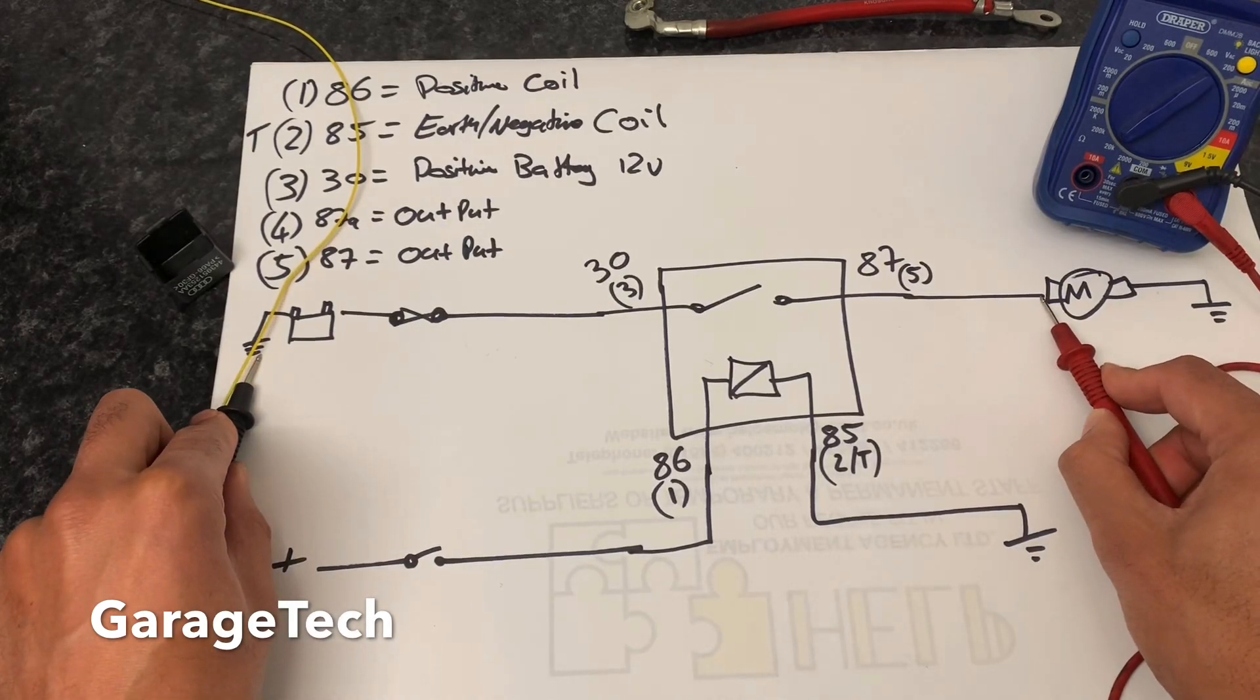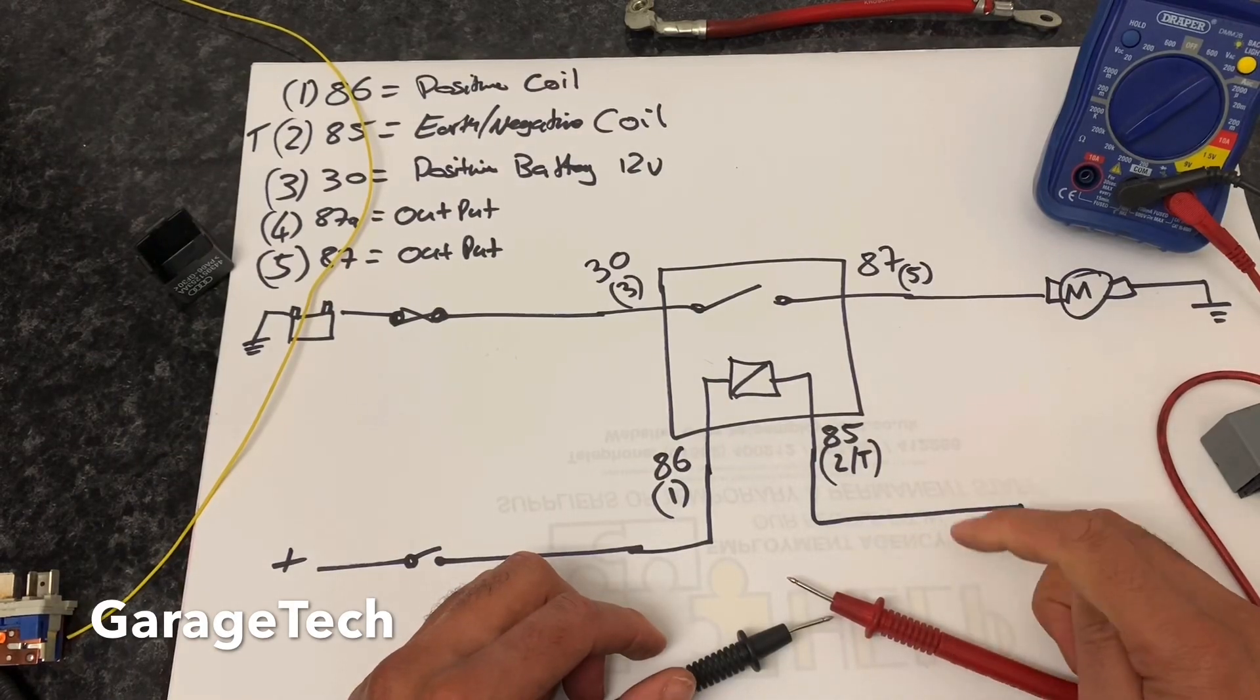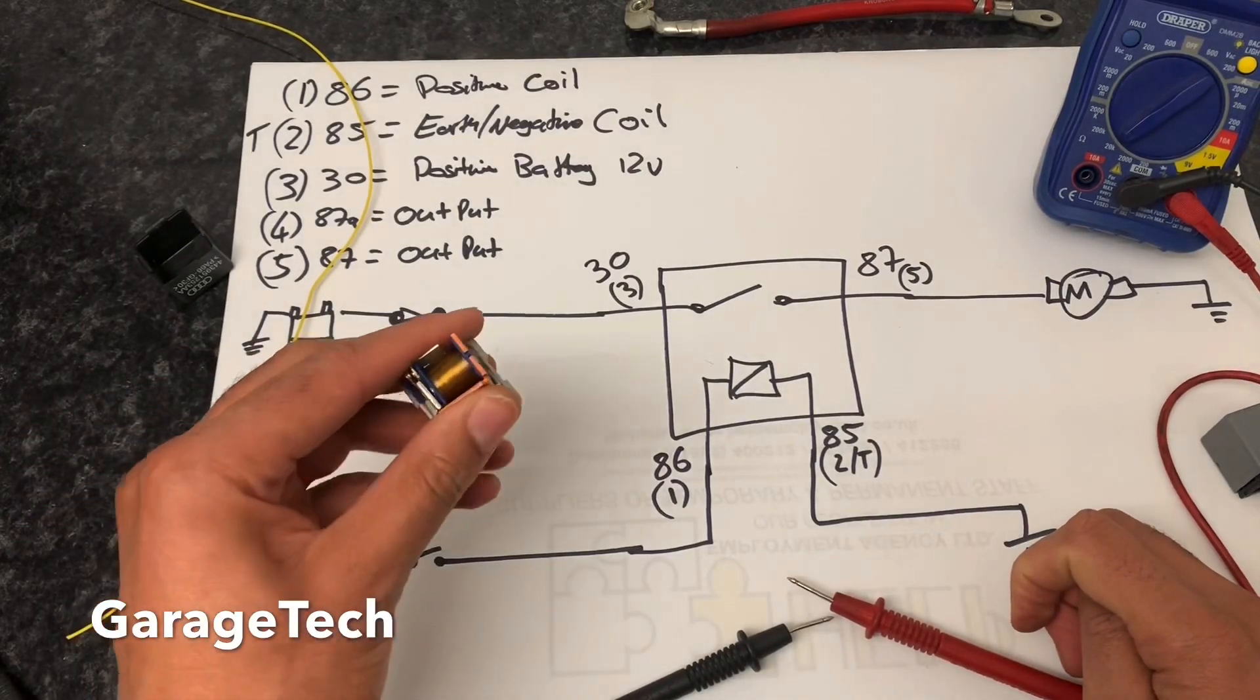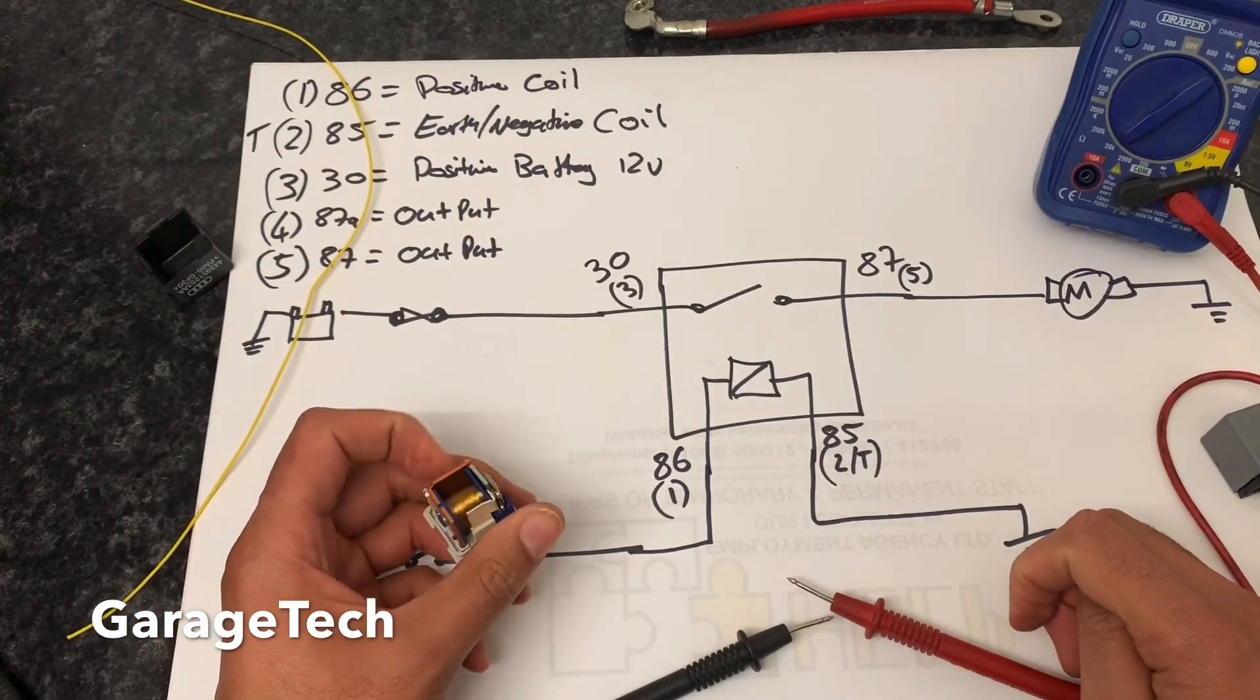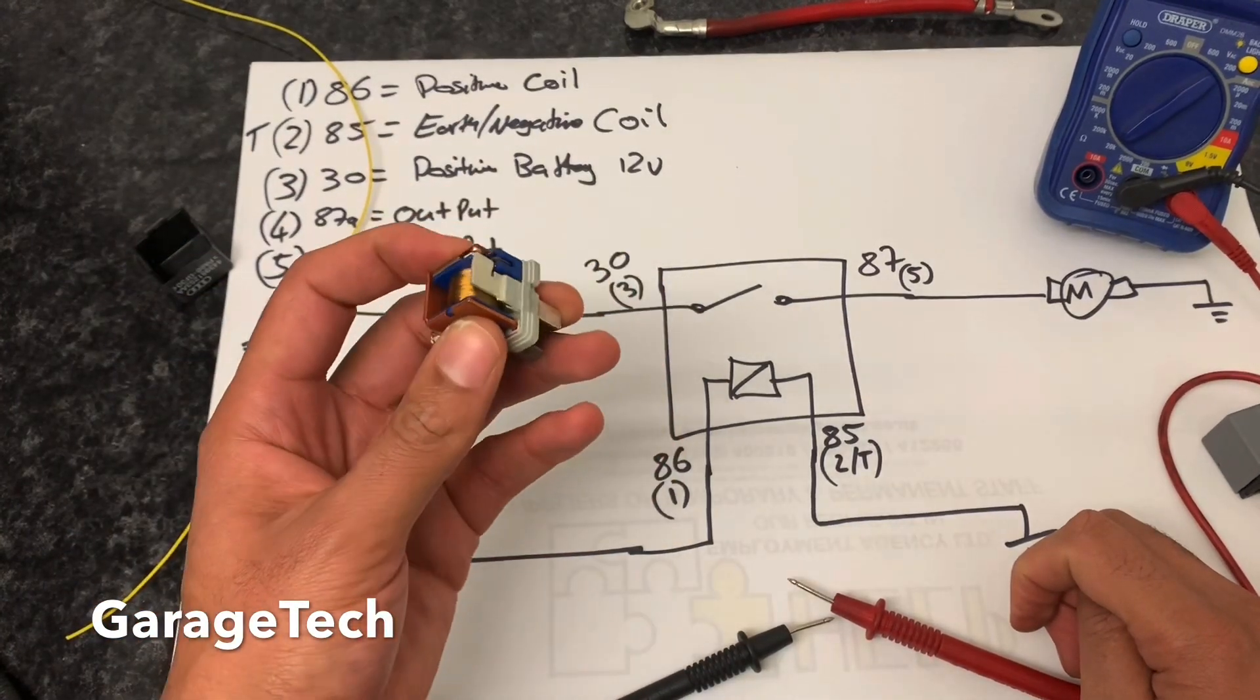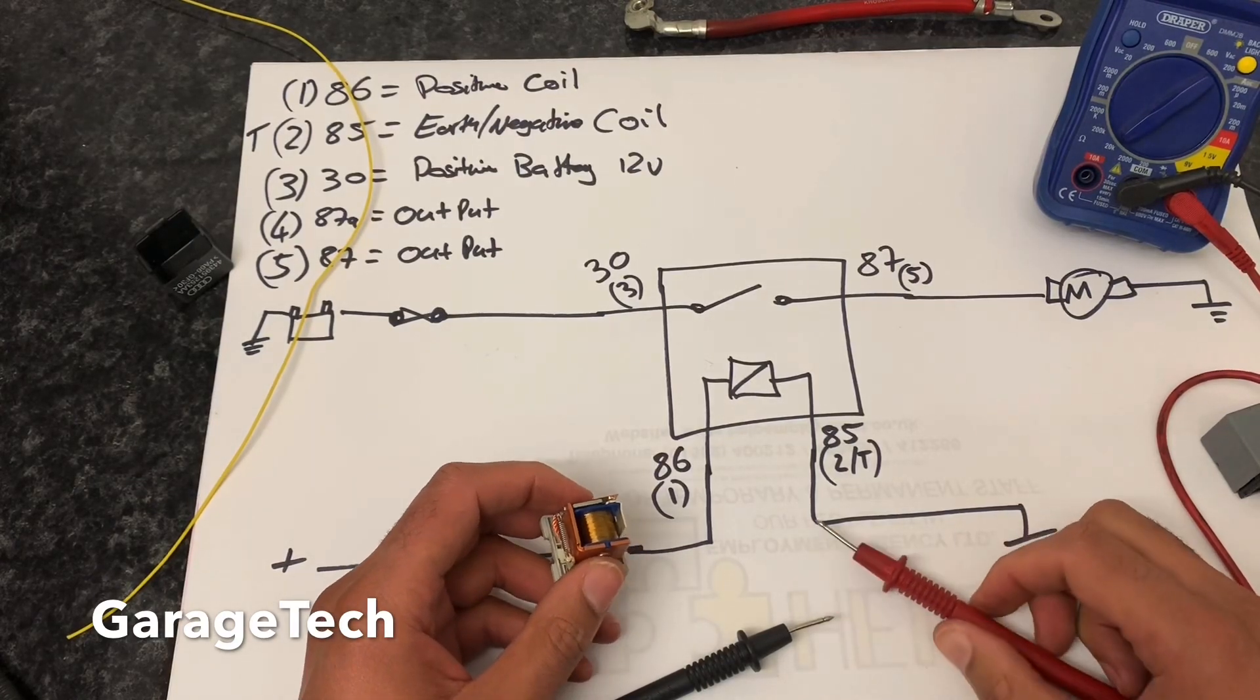That's pretty much it, guys. As I said, check out those relay jumper kits. They're quite good, easy to get hold of, and they are really useful for helping you check relay circuits. Okay guys, thanks for watching, and take care.